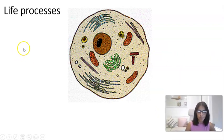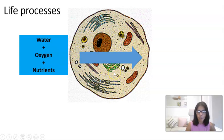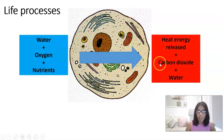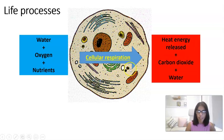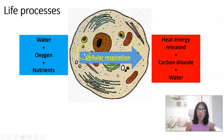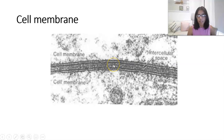Just a reminder that this lesson coincides with your textbook, chapter 4, pages 40 to 44. I strongly recommend that you read those pages either before, during, or after this lesson to help consolidate your knowledge. By the end of this lesson, you should be able to describe the structure of the cell membrane or plasma membrane.